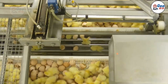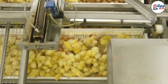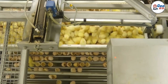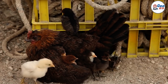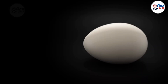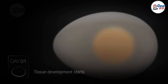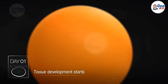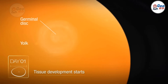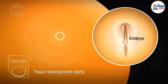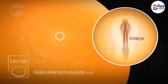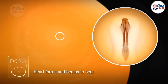Starting from day 1 and progressing through each significant stage up to day 21. Day 1: Fertilization occurs and cell division begins, forming the blastoderm, which will develop into the embryo.